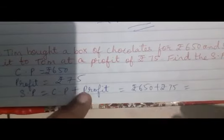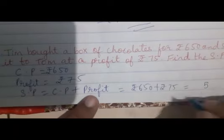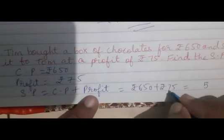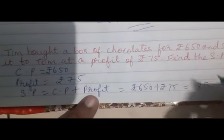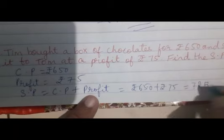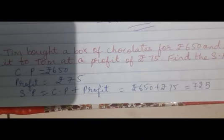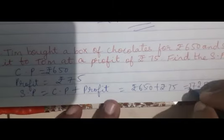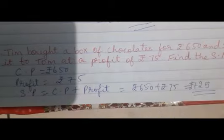7 plus 5 is 12. The answer is 725 rupees.